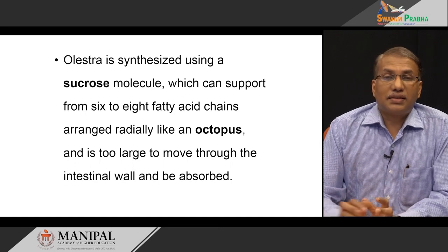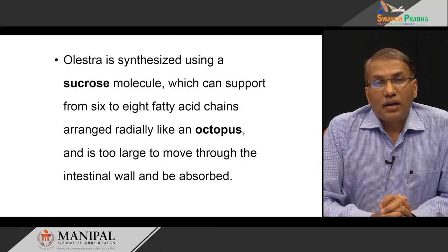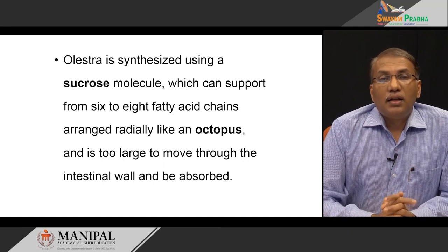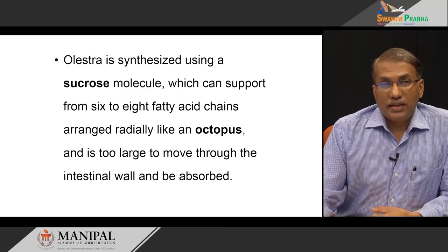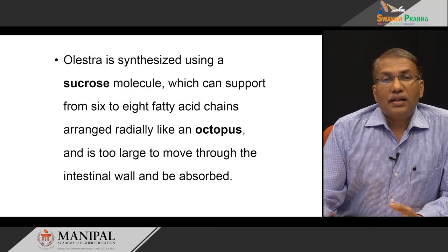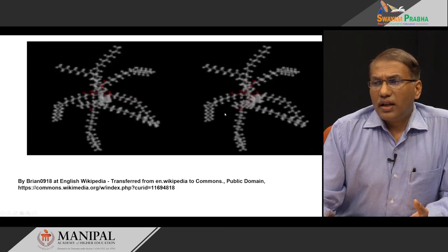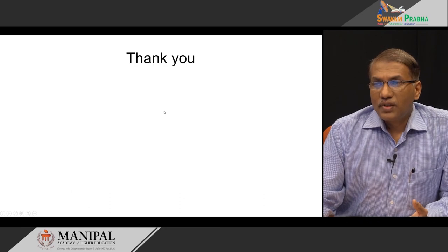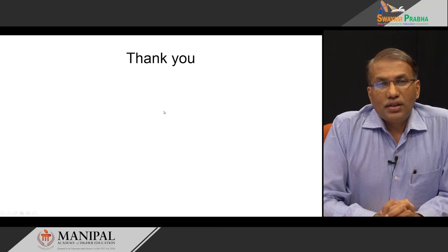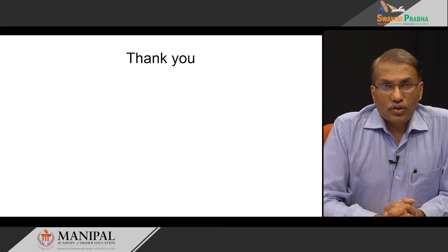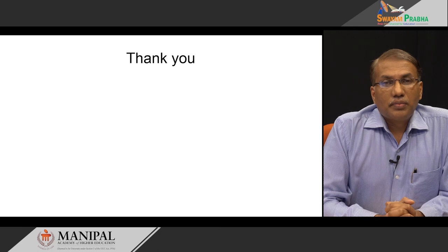Olestra is a synthetic polymer made up of sucrose hybridized with some fatty acids. It has the taste of typical oil but there is no enzyme in our system to digest it. It can be used for cooking or frying food items but does not have any calorific value. This is the structure of olestra, also known as olean. I hope you understood the basic principles behind the process of absorption and the role of transporters and the type of sugar present in our diet. Thank you.